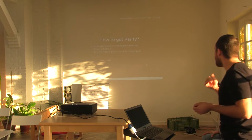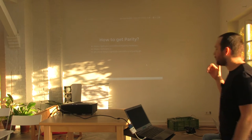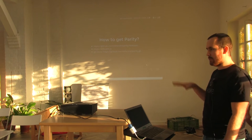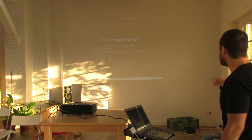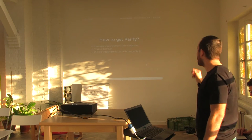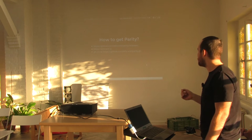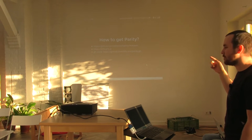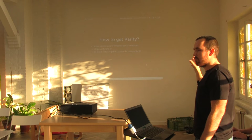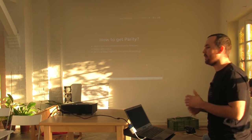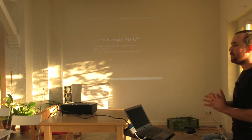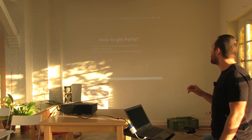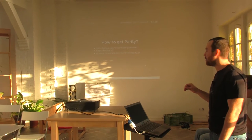So first, how to get Parity. For those who don't have it and want to participate in the workshop, you can get it from the release page. There is a 1.4.5 beta release, or go to ethcore.io, or you can clone Parity and compile it yourself if you have the Rust compiler. If you are a Mac user, for this workshop please don't use the installer because it will be difficult to switch to a test network.